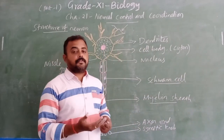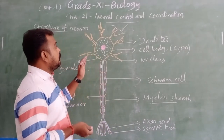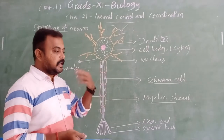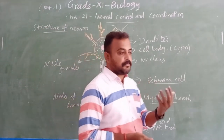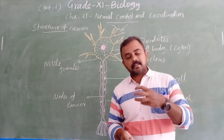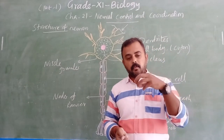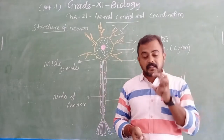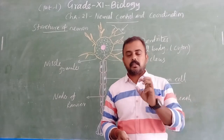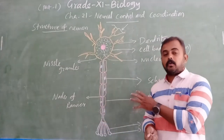The types of neurons will be explained in the next class, as we have different types of neurons. We will also explain how the electrical impulse is conducted — from one neuron to another neuron and within the neuron — how messages are transported. I hope you all understood the structure of the neuron, the human neural system, and the functions of the nervous system.